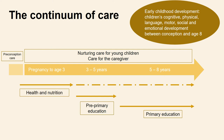Before we delve deeper into these themes, a quick reminder: early childhood development is defined as children's cognitive, physical, language, motor, social and emotional development between conception and age eight. To support early childhood development, interventions are needed across the life course and in a continuum of care. The Nurturing Care Framework emphasizes the first three years of life, with a strong emphasis on health and nutrition. When children grow older, other sectors such as education take on responsibility alongside parents.